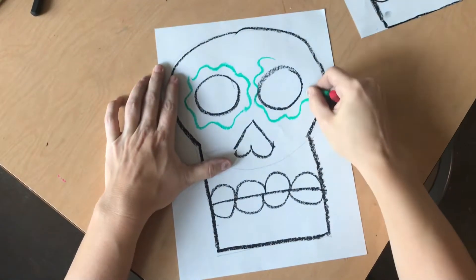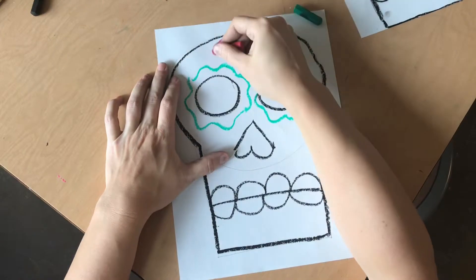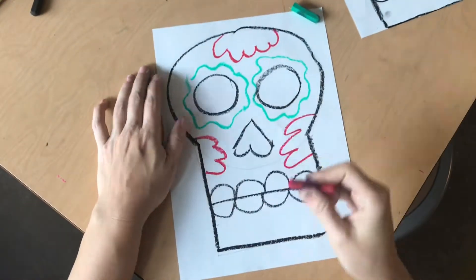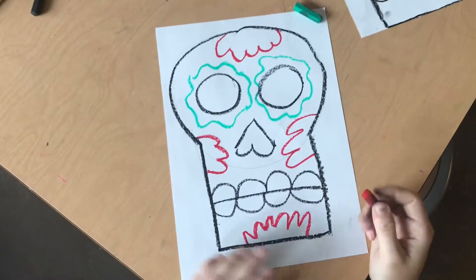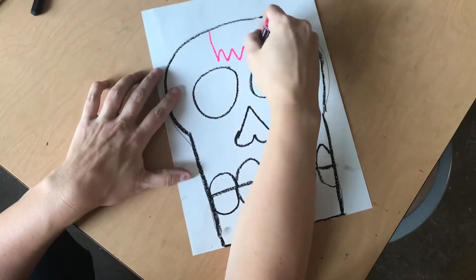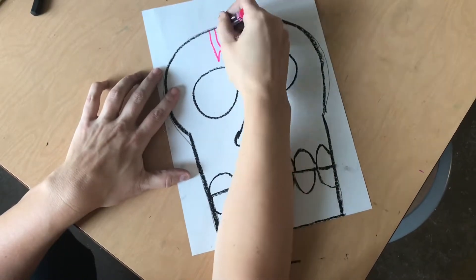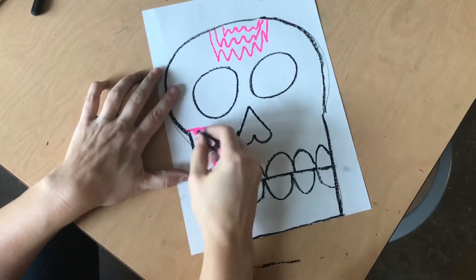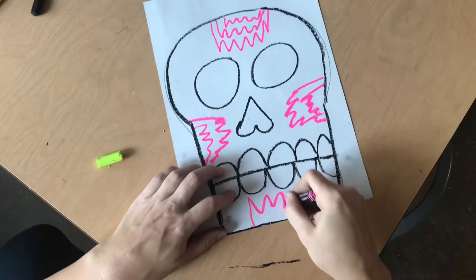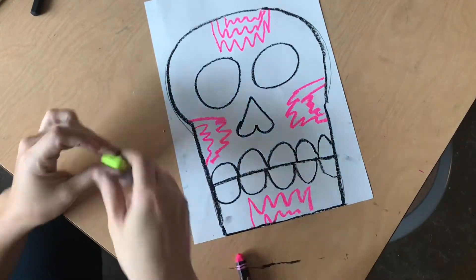Then you get to decorate your sugar skull however you like. You might use wavy lines around the eyes, on top, on the cheeks, or on the chin. You might use spiky lines on the forehead, on the cheeks, and on the chin. Those are the areas of a sugar skull that are easy to decorate.